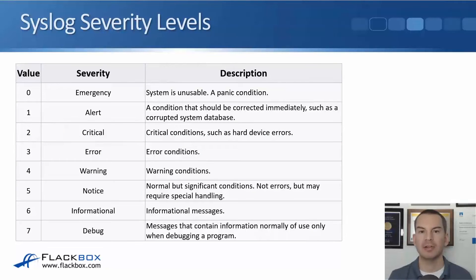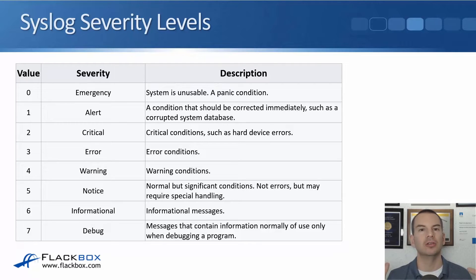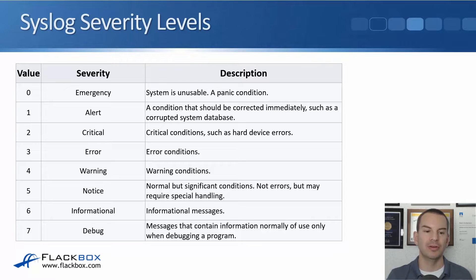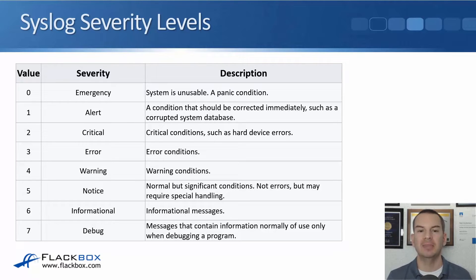Now let's look at the severity levels. There are eight different levels from zero through to seven, with zero being the most serious. These are standard levels used the same way by all vendors. The most serious event you can have is an emergency, which is value zero — that means the system is unusable, a panic condition; it's really bad.